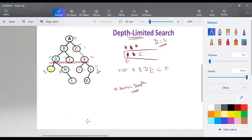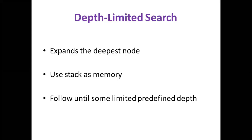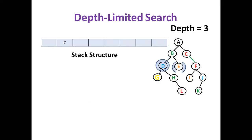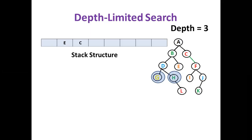For one more example of depth limited search: depth limited search expands the deepest node using a stack, following only up to a predefined depth limit. Here the depth value is 3, so searching occurs until depth equals 3. Starting from root node A, A is added to the stack and popped. Children B and C are added. B is popped; its children D and E have depth value 2, which is within the limit, so they are added. D is popped; its children G and H have depth value 3, which equals the limit, so they are added to the stack.